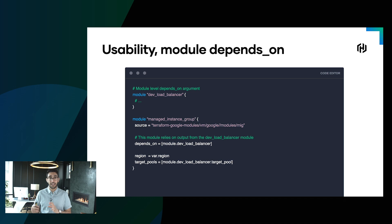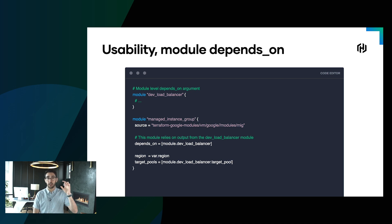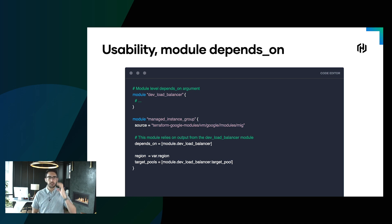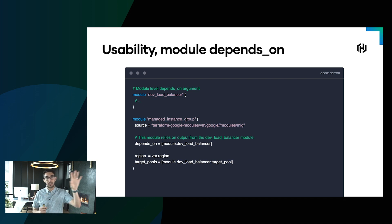While we could do that at a resource level, it wasn't available at the granularity of a module — and now it is with Terraform 0.13. So in this example, what we might need to do is deploy a load balancer and make sure that comes up successfully before we define a set of compute instances that get deployed behind that load balancer. Now we can explicitly say we have a depends_on relationship, and Terraform will make sure that comes up before anything within the module gets instantiated.